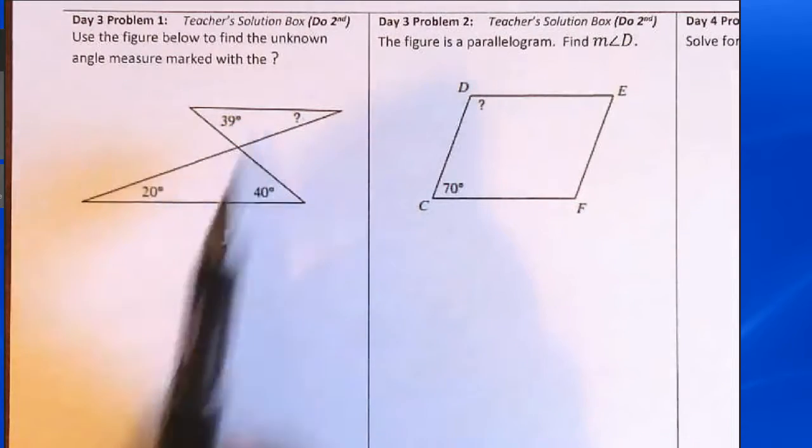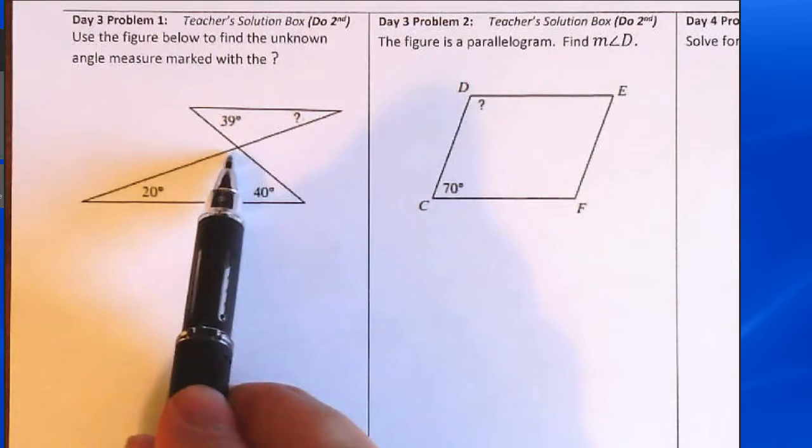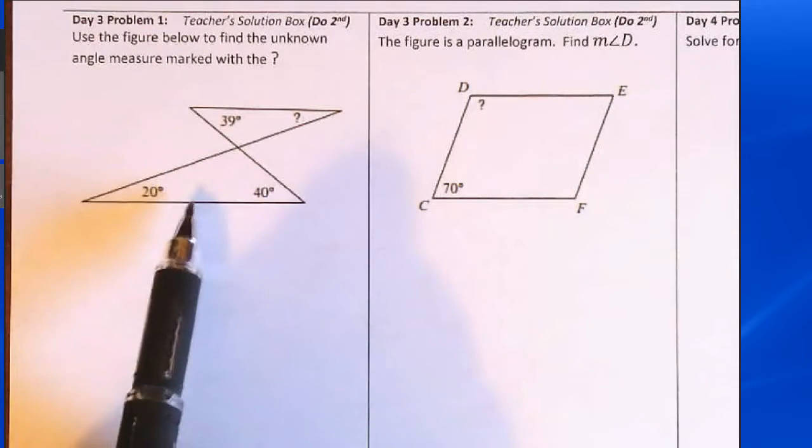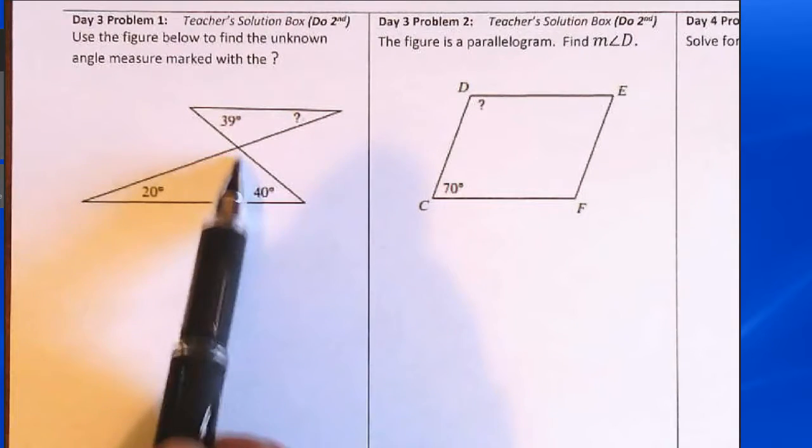Notice we have a pair of triangles and in the bottom triangle two of the angles are known, but this angle measure here is not known. Let's use the fact that all three angles will add up to 180 to find this number here.